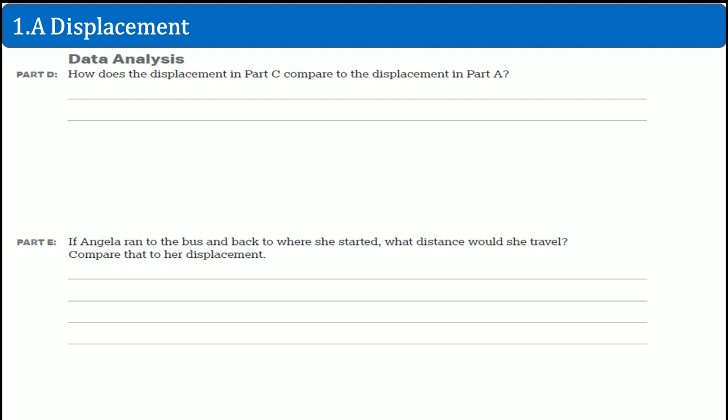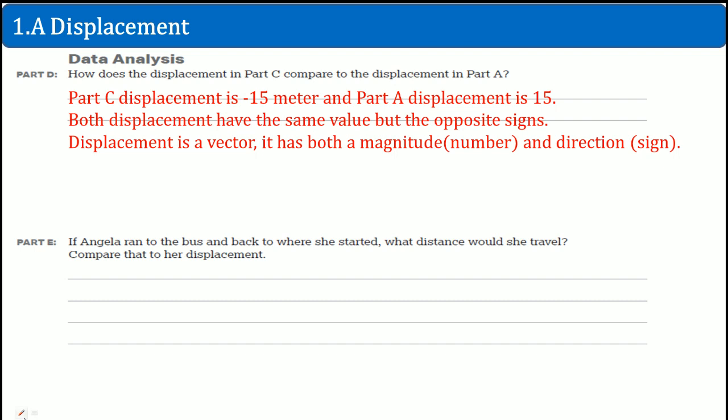Part D: How is the displacement from C different from part A? Part C displacement is negative 15 meters, where part A was positive 15. Both displacements have the same value but opposite signs. Displacement is considered a vector by definition - it has both magnitude and direction.